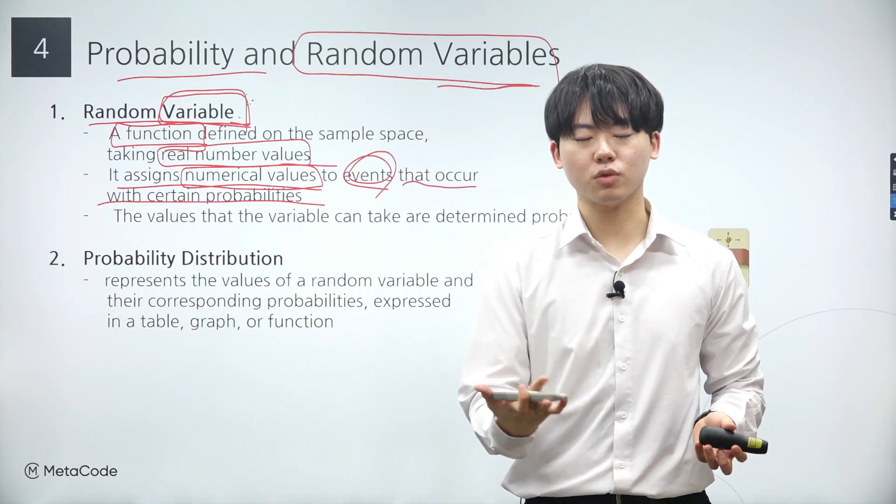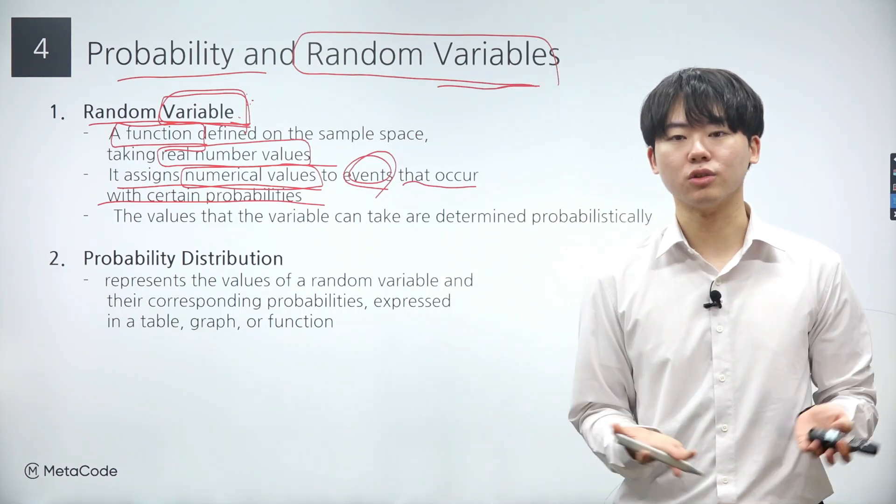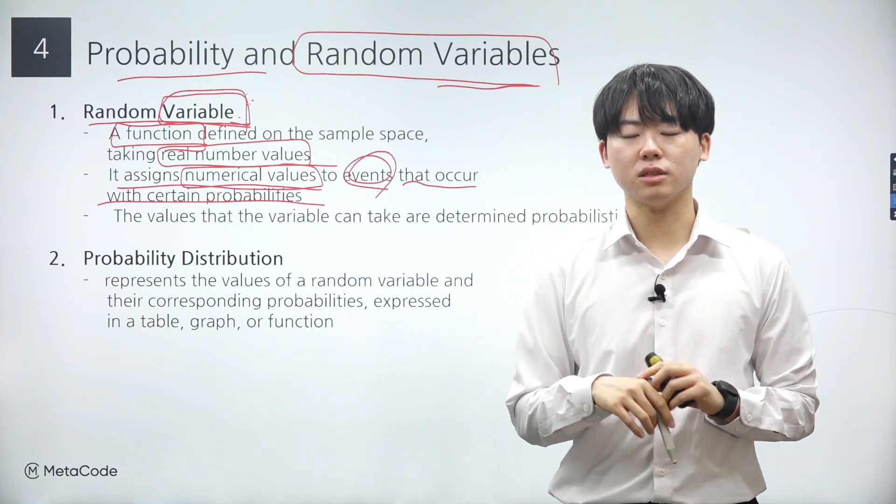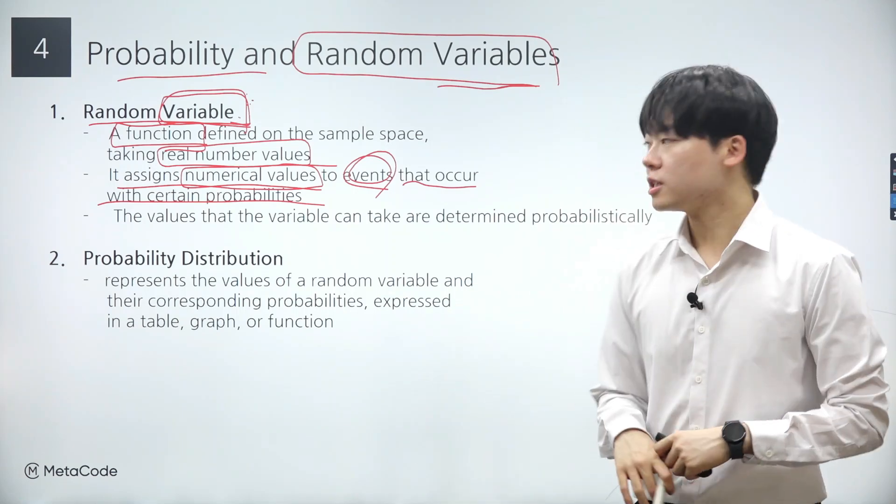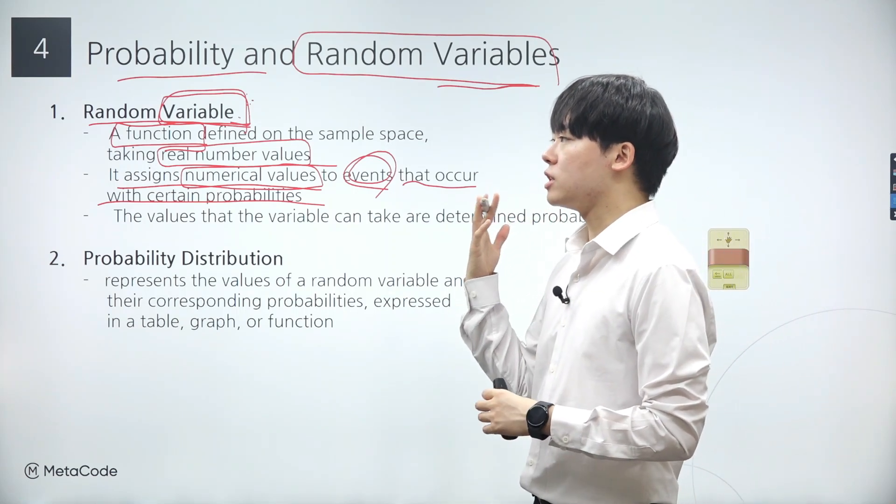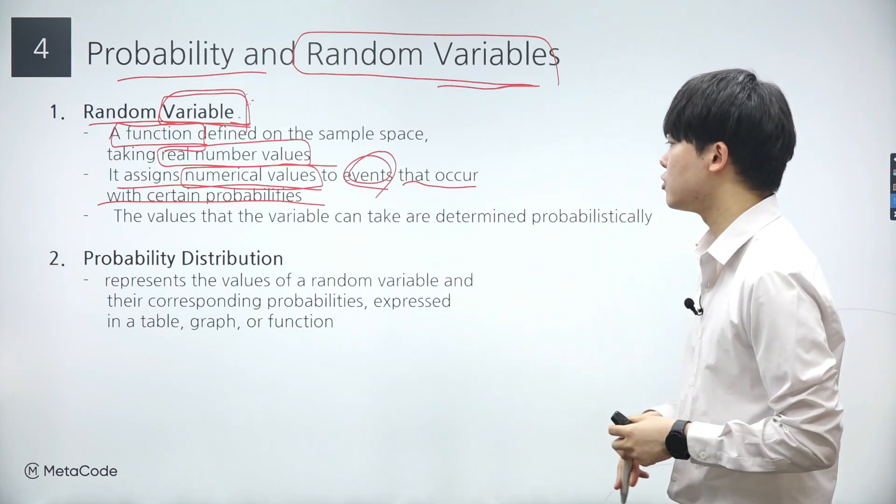In this case, since there are four possible outcomes in the sample space and two of them belong to event A, the probability of event A is 0.5. This example illustrates how a random variable works. It assigns numerical values to events based on their probabilities.